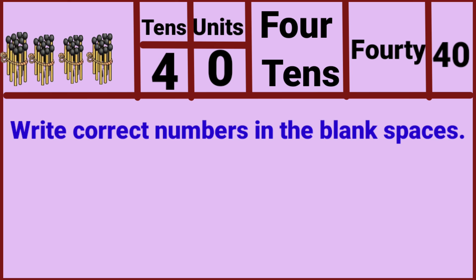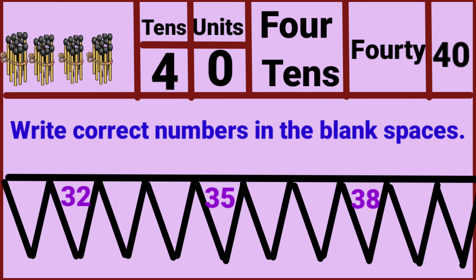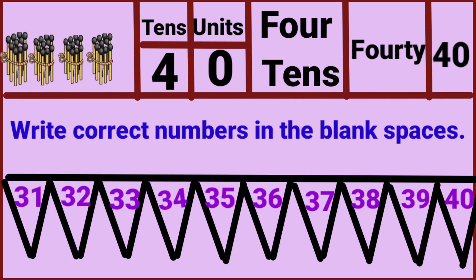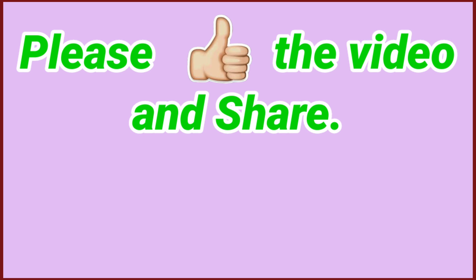Write the correct numbers in the blank spaces. Thirty-two, thirty-five, and thirty-eight are already given. Let's complete this: thirty-one, thirty-two, thirty-three, thirty-four, thirty-five, thirty-six, thirty-seven, thirty-eight, thirty-nine, forty.